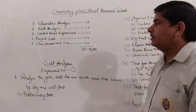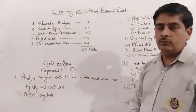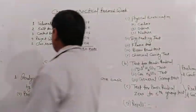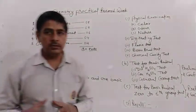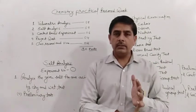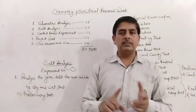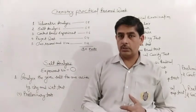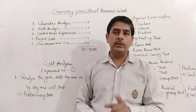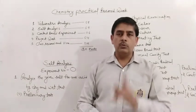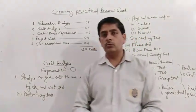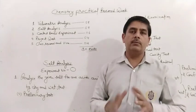In our practical there are five things which we have to mention. First is volumetric analysis, which carries eight marks. In volumetric analysis we have to write the titration. First titration is about Mohr's salt and KMnO₄ solution, and second titration is about oxalic acid and KMnO₄ solution, which we have discussed in our previous videos. I will provide the link of those videos in the description box. I strongly recommend you to see those videos so that you can know everything about the titration.